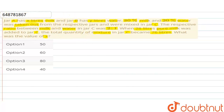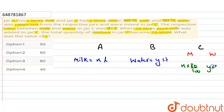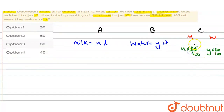x کی value پوچھیں - milk کی quantity کتنی تھی jar A میں. دیکھو، 3 jars ہیں ہمارے پاس: A jar ہے، B ہے اور C ہے. A کی بات کریں تو ہمارے پاس صرف milk ہے jar A میں - milk is equal to x liter given ہے. B میں صرف water ہے، y liter ہے. C میں دونوں چیز ہیں: milk بھی آئے گا اور water بھی. Milk کتنا ہوگا: 80% جو ہے milk لیں گے، تو x کا 80% یعنی x into 80 by 100. اور water لیں گے تو y کا 20% یعنی y into 20 by 100. تو 4x by 5 milk ہو گیا اور y by 5 water آ گیا.